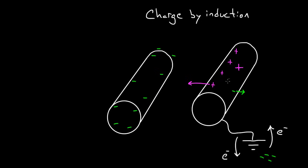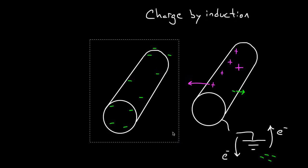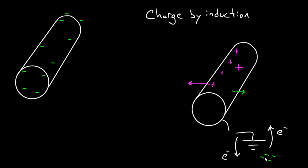So you've charged this rod without touching it because you let those negative electrons leave. If you're clever, you cut the ground wire before you take away the inducing rod. If you removed the charged rod first, the negatives would have come back from ground and the rod would become uncharged again. But by cutting the wire first, they can't get back — they're stuck — and you've permanently charged this piece of metal without ever touching it. That's charge by induction.